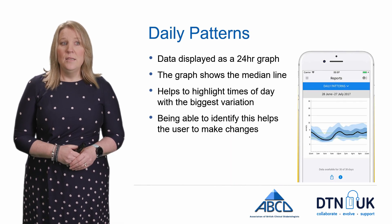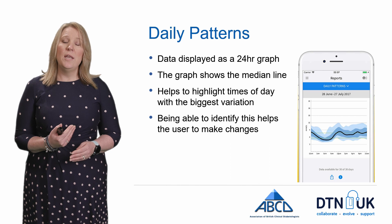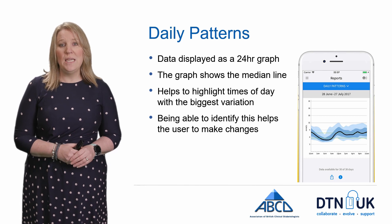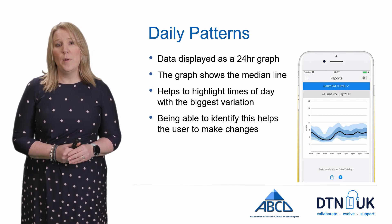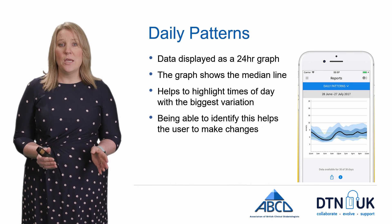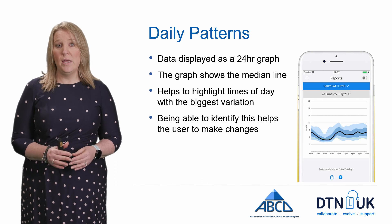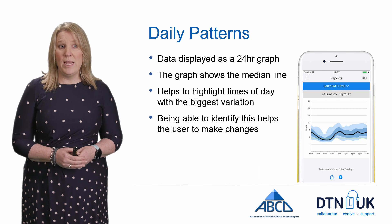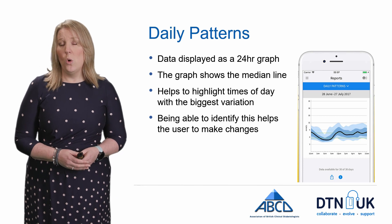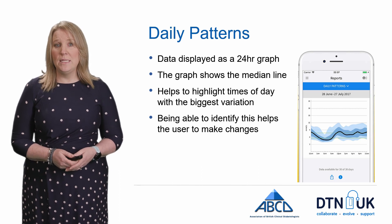Daily patterns are very similar to the daily graphs but plot a number of days — 7, 14, or 30 days — onto one graph. You can see daily patterns and trends through exercise or your insulin regimes all plotted over a 24-hour period. The graph shows the median line in dark blue against your target range, clearly showing areas of huge fluctuation or areas of hypo or hyperglycemia. These will be dealt with in more detail in other modules.